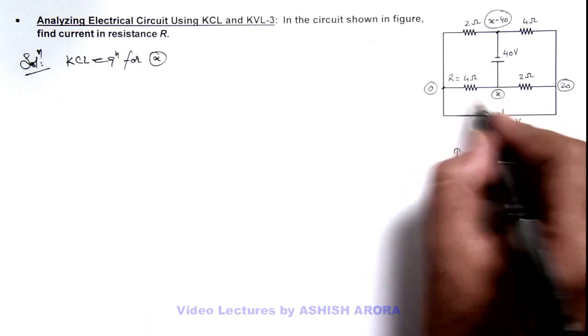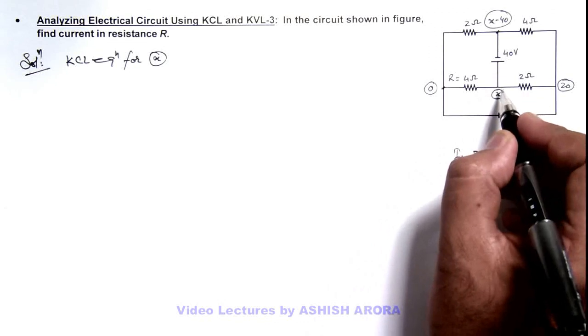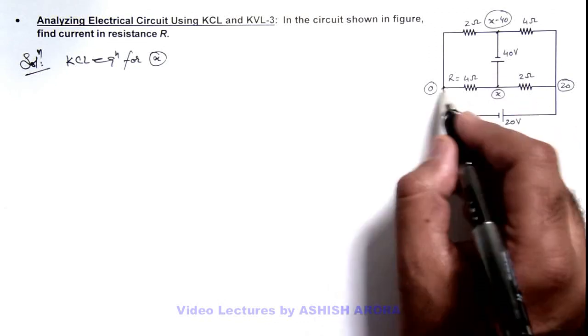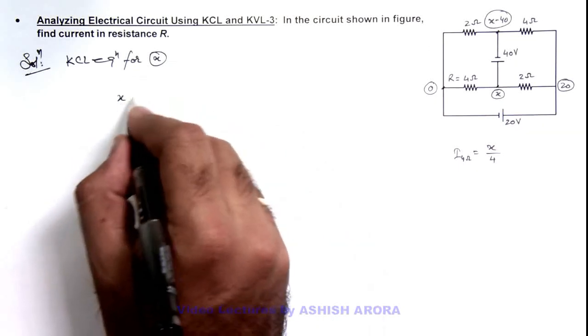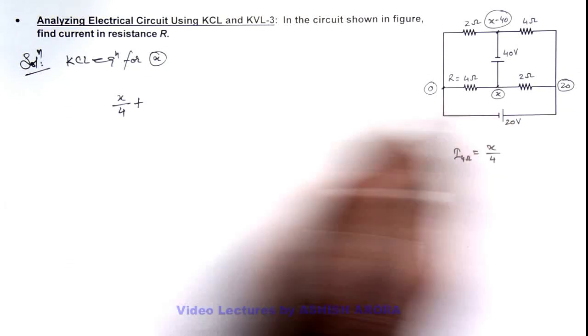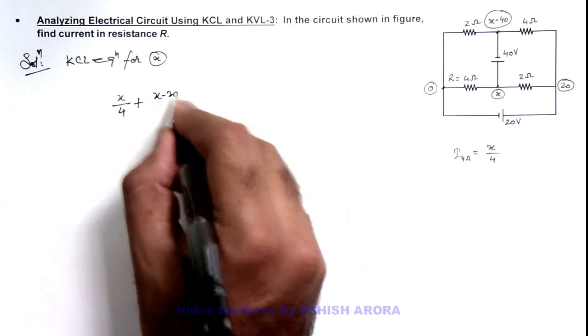For which I can take sum of all currents going away from this junction x is equal to zero. So current going in this direction can be written as x minus zero by 4, plus the current going in this direction is x minus 20 by 2.